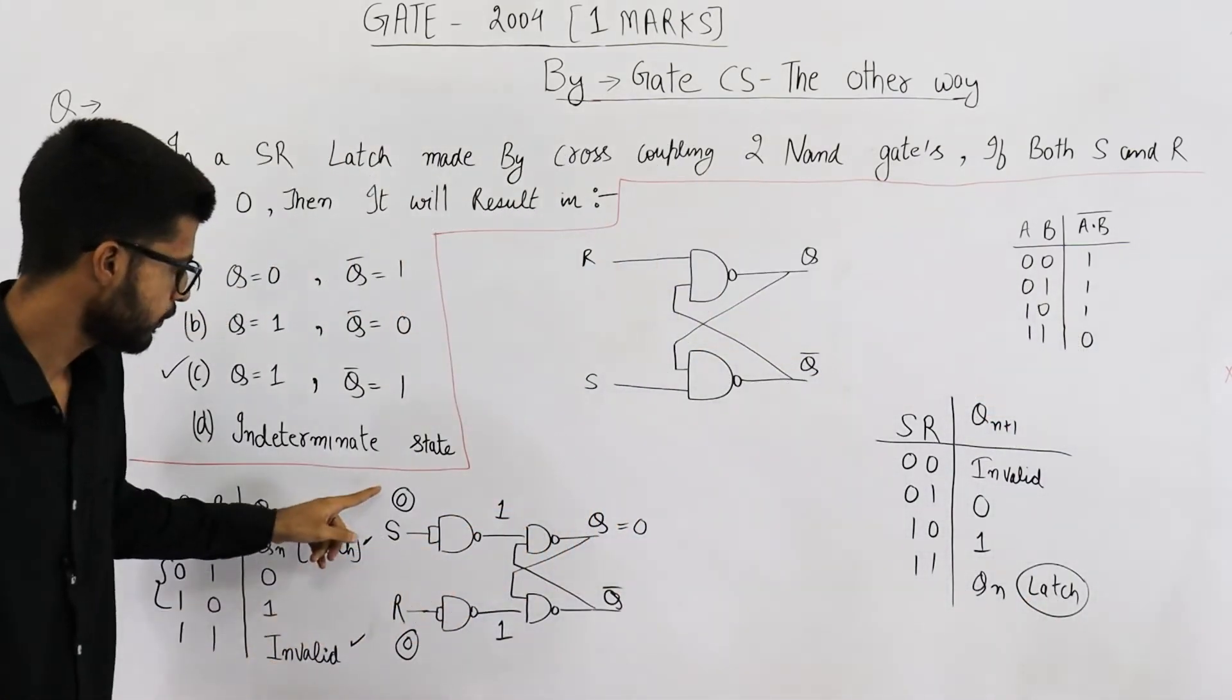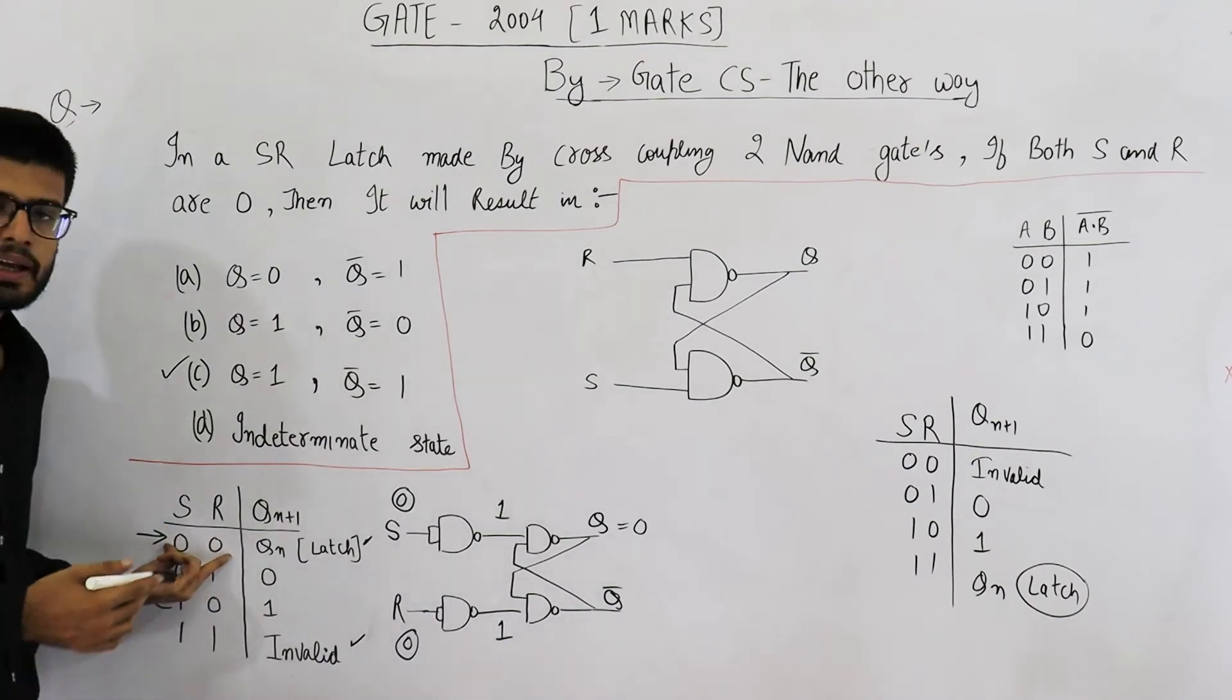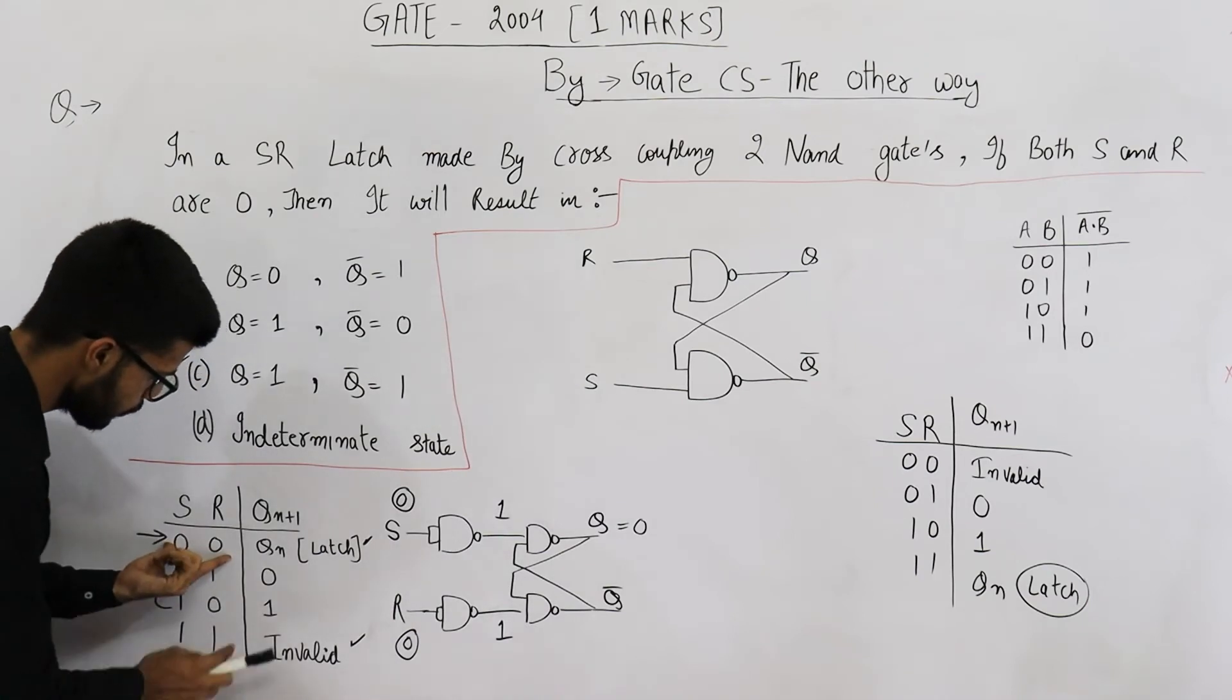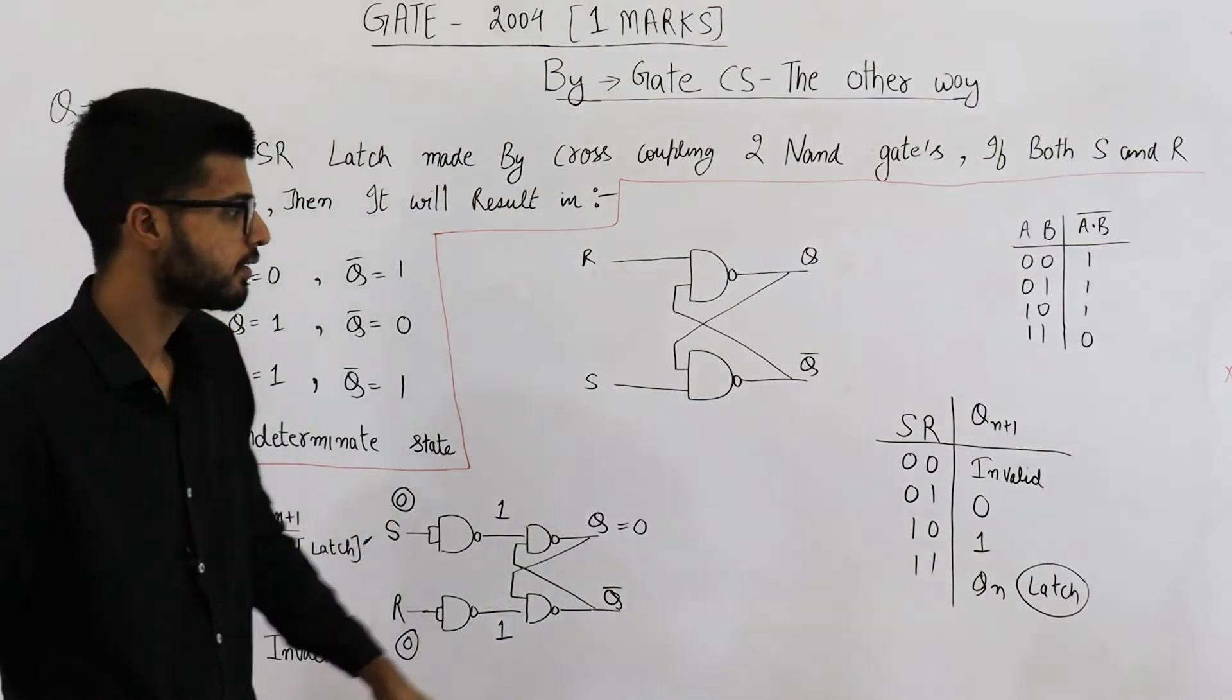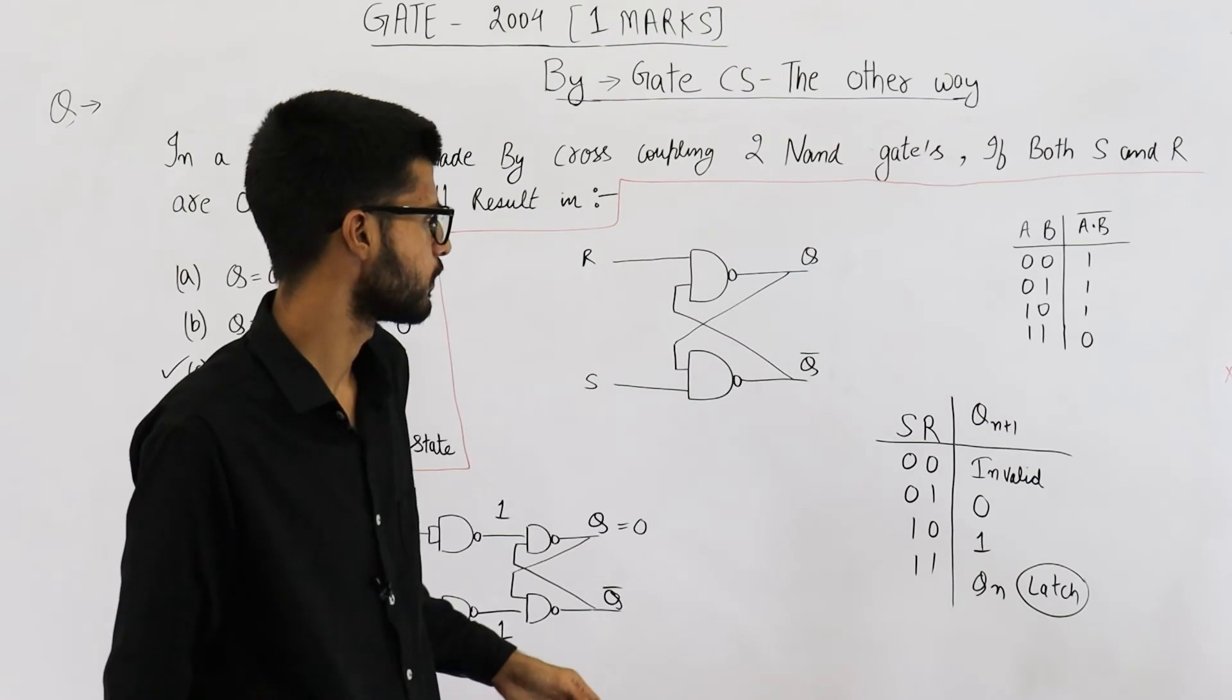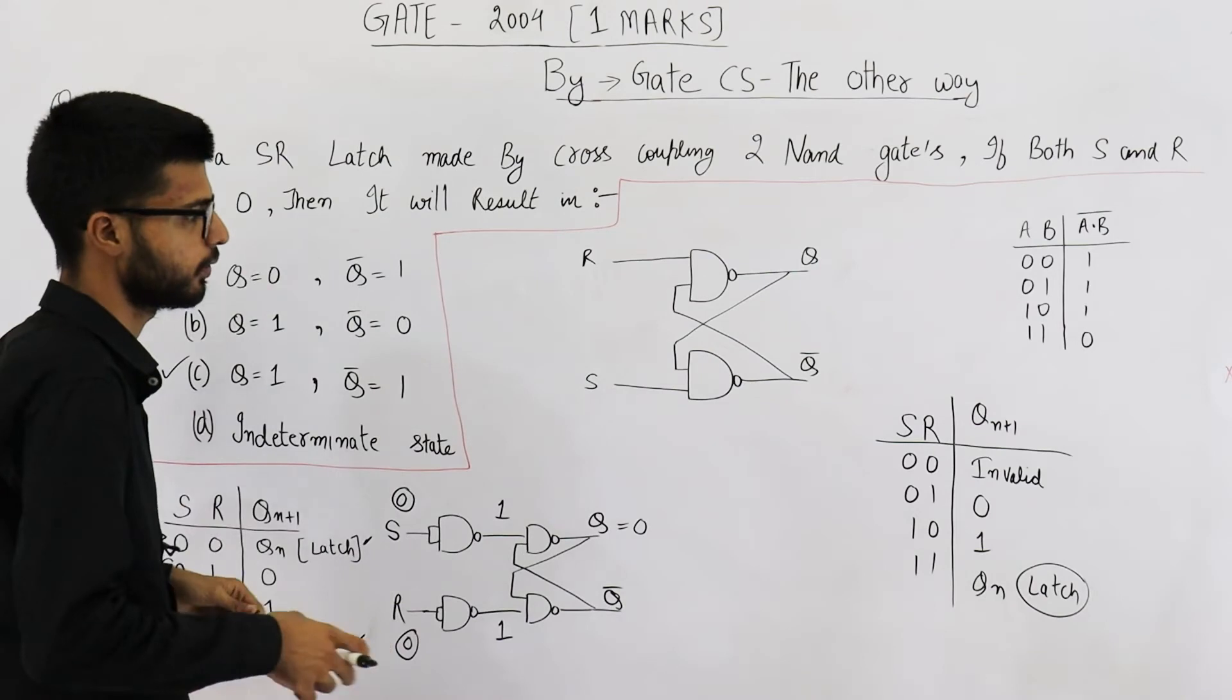Now, see, whenever the inputs are 0, 0, that means, this case, what actually this part is getting is 1, 1. That means, this state. On this input, actual input that is given to this part is 1, 1. That's the reason these two are reversed. You can see from here also. On 0, 0, we got 1, 1. That is invalid.